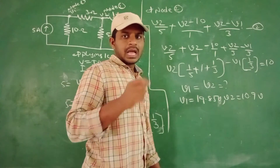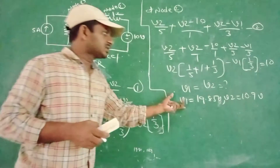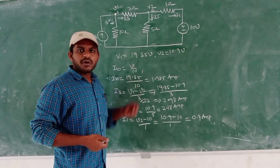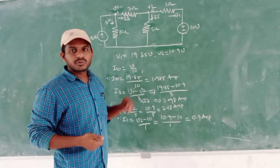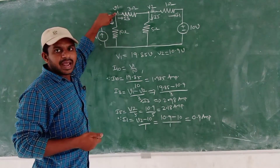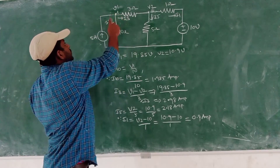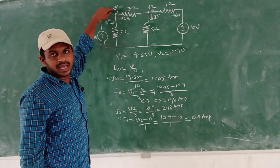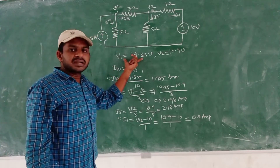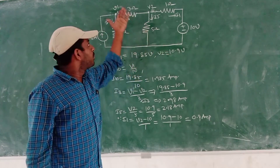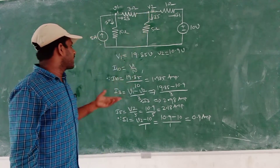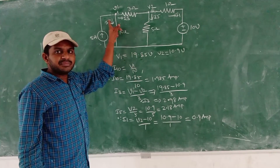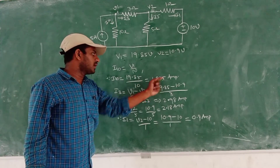From both voltage equations, we can get the individual currents at each branch. If you want to find the individual currents from the various node points, at node 1 with V1, if you want to calculate I10, then you get V1 by 10. According to I is equal to V by R, we get V1 by 10. Already we have calculated V1 as 90.85, so I10 is equal to 90.85 by 10, giving us 1.985 amperes.